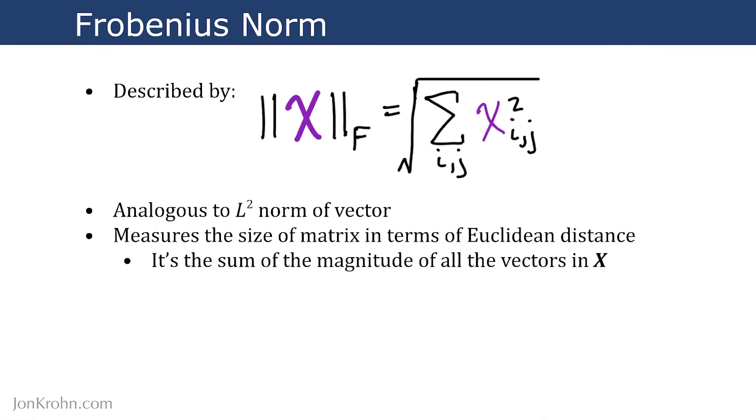Another way of thinking about the Frobenius Norm is to think of it as the sum of the magnitude of all of the vectors in some matrix X. So you could consider all of the columns in a matrix to be individual vectors, and it's just the sum of the magnitude of each of those vectors.